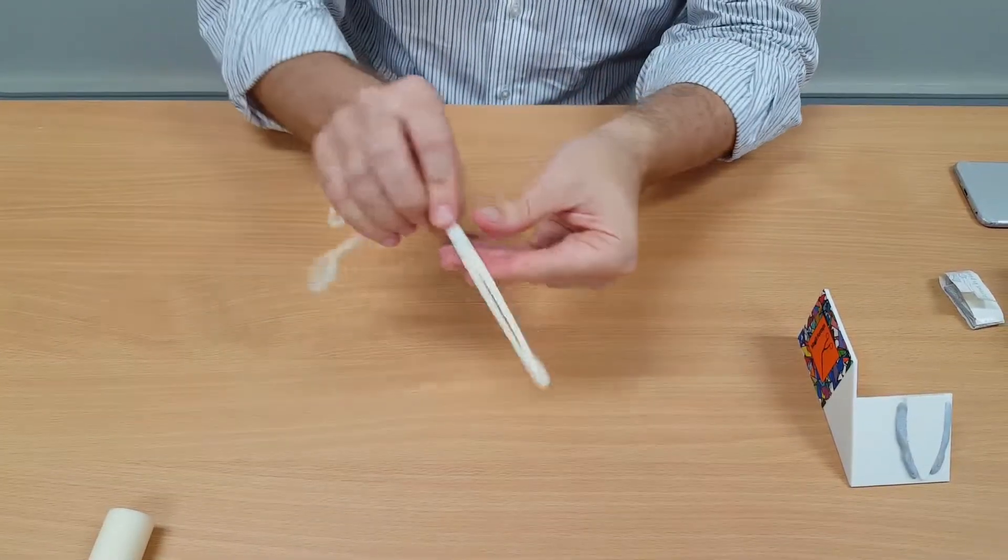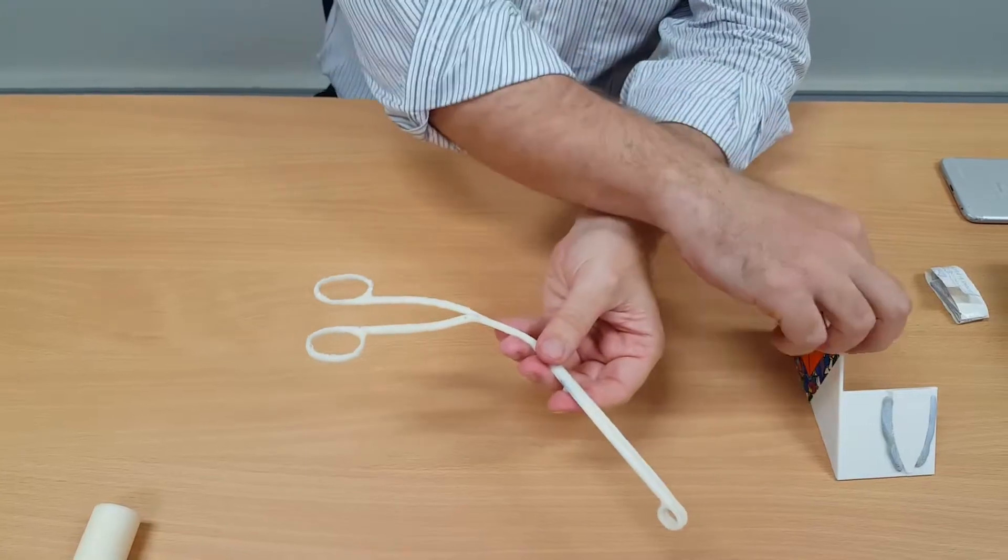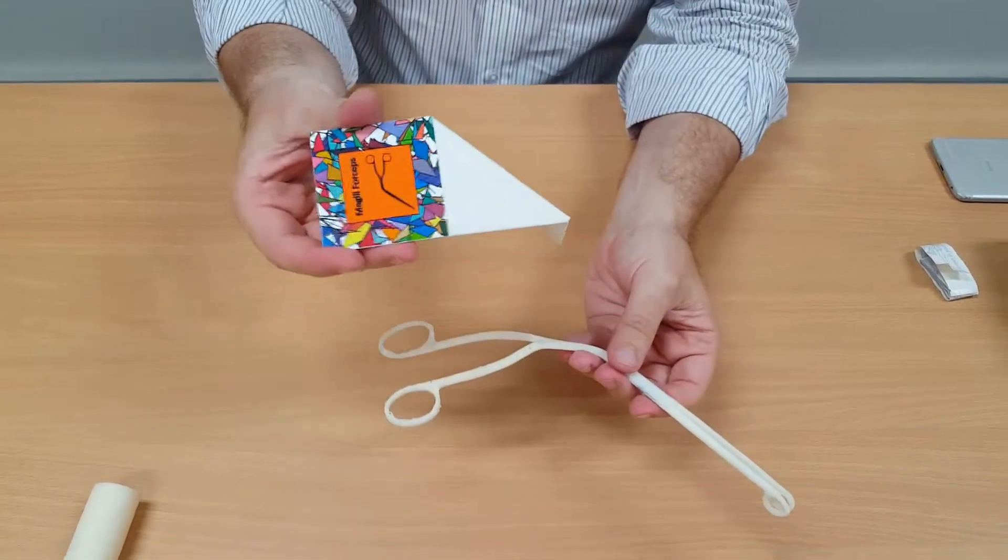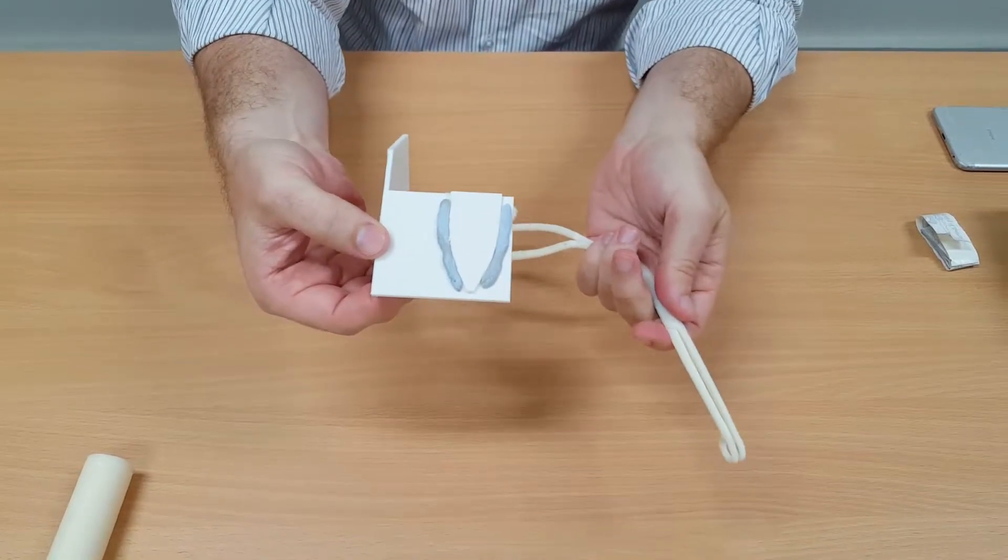Next we want to place the augmented reality marker onto our McGill forceps. So you will see that the marker is positioned in this way. I have put some blue tack onto the back of the marker.